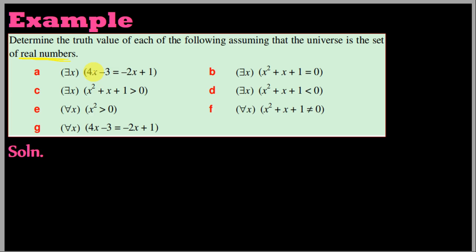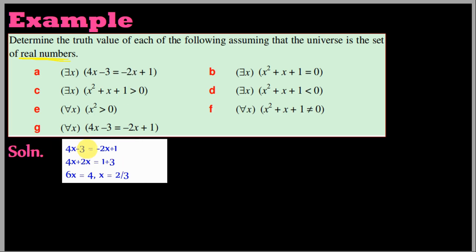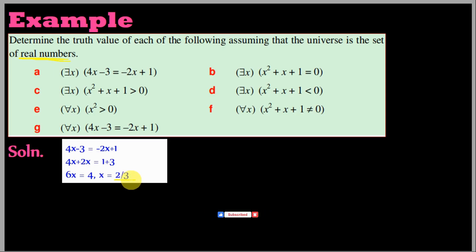The equation is 4x minus 3 equals minus 2x plus 1. Solving: 4x plus 2x equals 1 plus 3, so 6x equals 4, giving x equals 2 over 3. Since 2/3 is an element of the real numbers, this solution exists.